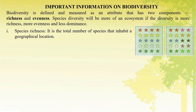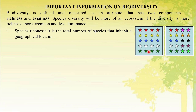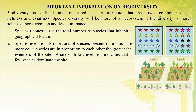Species richness is the total number of species that inhabit a geographical location. Here the number of species in the picture on the left side is 5, and the number of species in the picture on the right is 10. So in terms of richness, the right side image has more richness than the left. Species evenness represents the proportion of species present on a site. The more equal species are in proportion to each other, the greater the evenness of the area.